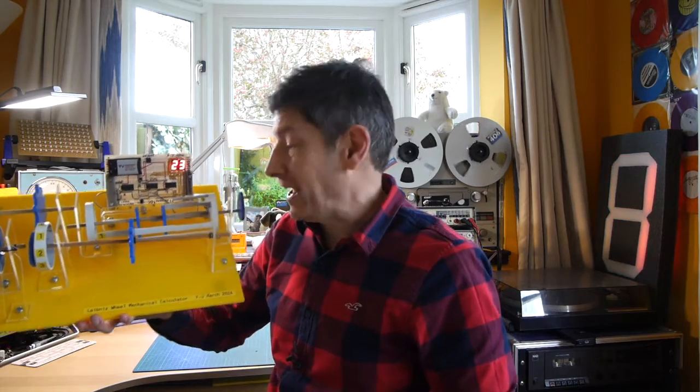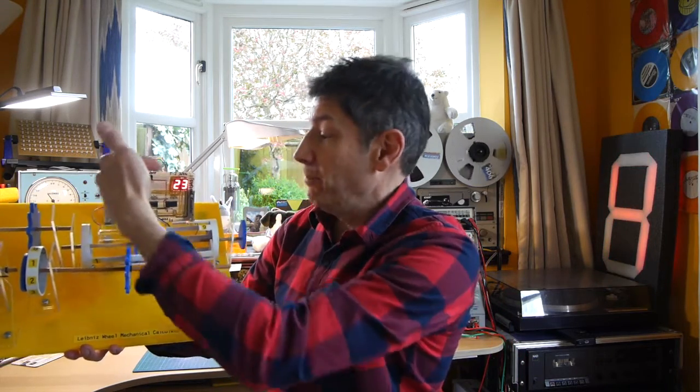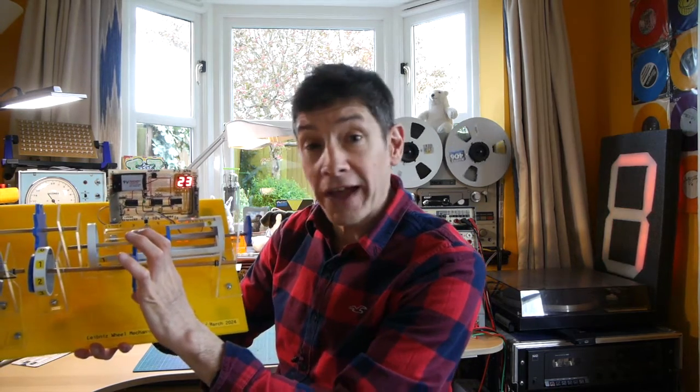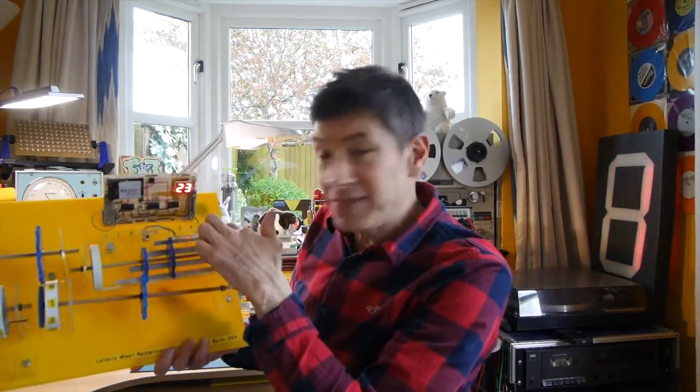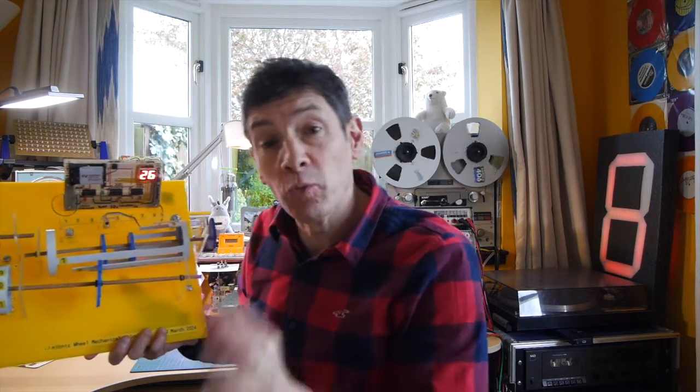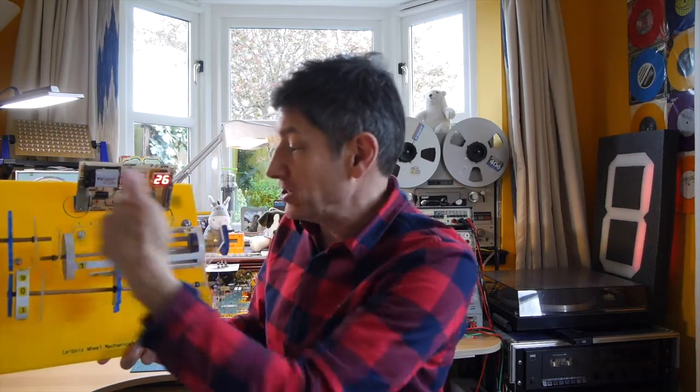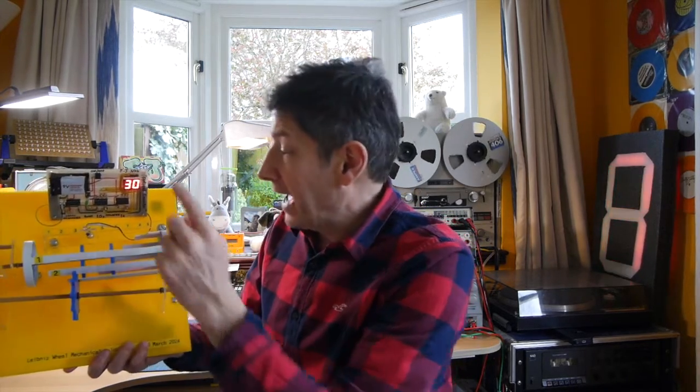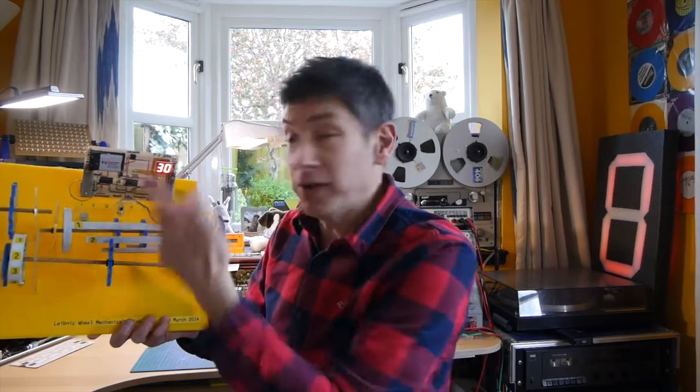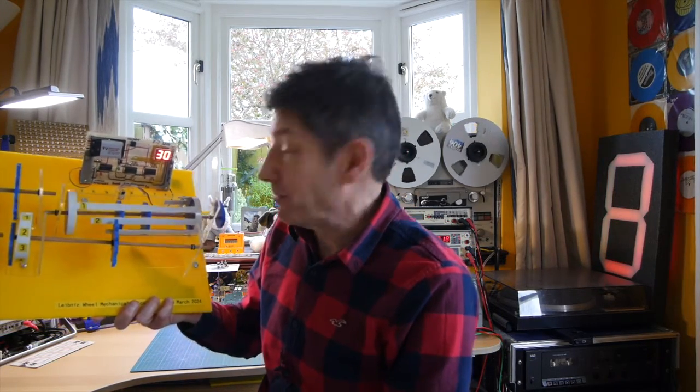But what we're going to do today is instead pick up the number of teeth that pass during one rotation not with a counting wheel but with an electronic counter. So it occurred to me that because I made this rather unusual Leibniz gear that's hollow with very bright white teeth, I could use an optical sensor to reflect off each of the teeth to actually count how many passed when we did one full rotation of the gear. And I could then feed that through to a counter circuit that would output the answer for the calculation that we were doing. So I thought let's have a go at building that.